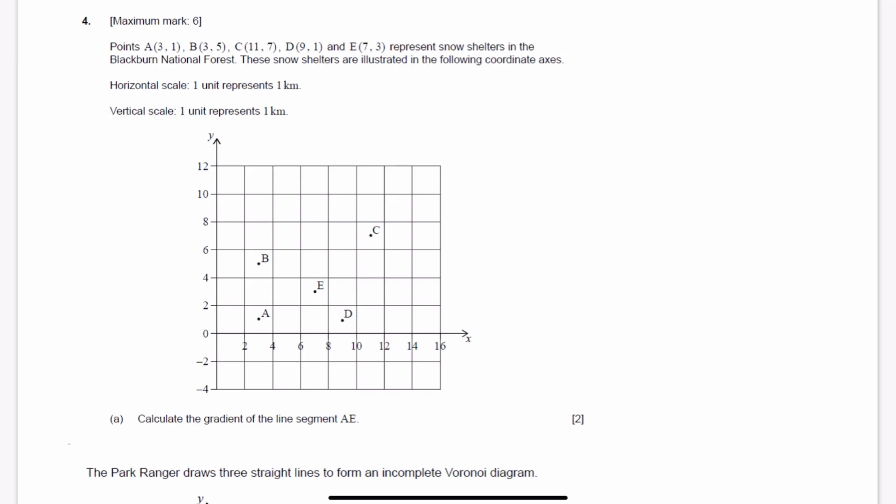So far this is pretty easy. You need to figure out the gradient. Gradient for IB is slope of the line segment AE. So I'm going to take the points. This is for part A. A is 3, 1. E is 7, 3. To figure out the gradient you're going to use the formula Y2 minus Y1 over X2 minus X1. It is in the formula packet. 3 minus 1 over 7 minus 3 is equal to 2 fourths which is equal to 1 half.